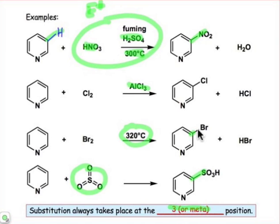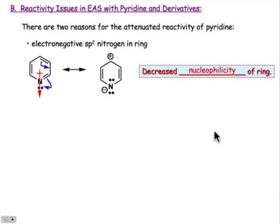The substitution always goes in the so-called meta or 3-position relative to the nitrogen atom in the ring. On the next slide, we want to understand both why the ring is so deactivated and why the substitution goes in the 3-position.